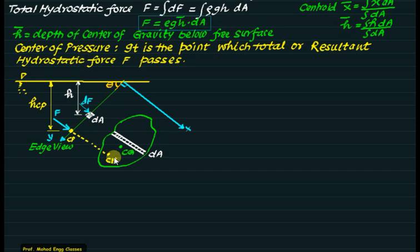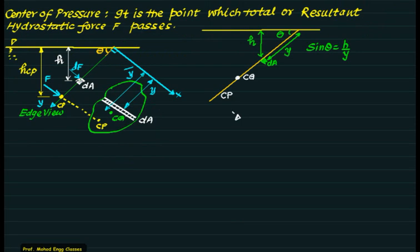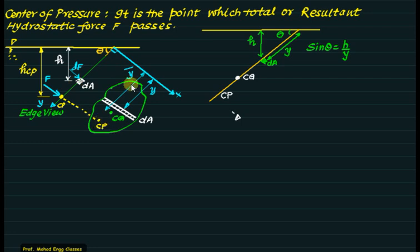The resultant hydrostatic force passes through a certain point called the center of pressure (CP). The center of pressure is the point through which the total resultant hydrostatic force F passes. We assume the CP lies at a lower point than the center of gravity (CG). Taking the axis perpendicular to the edge view as the x-axis and the other as the y-axis, the elemental area dA is at distance y, the CG is at y-bar, and the CP is at distance y_cp.